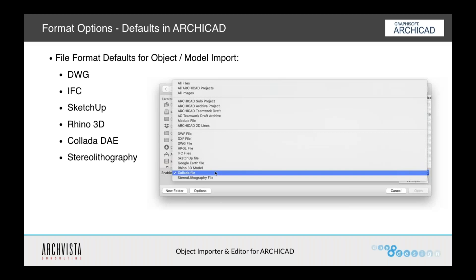If we're using the built-in defaults in ARCHICAD, we have the options to bring in DWG, IFC, SketchUp, Rhino, 3D, Collada DAEs, and Stereolithography. These are the built-in formats.